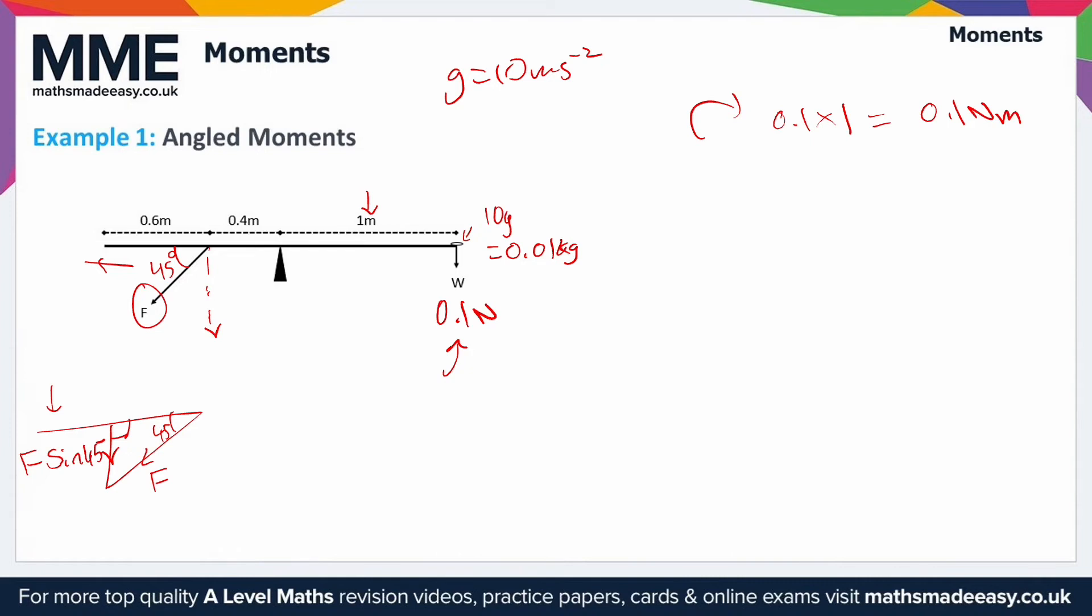So f sin 45. The distance from the pivot is 0.4 so the anti-clockwise moment is 0.4 times f sin 45. We can't really do much with that at the moment, but we know this is in equilibrium so these two are equal. So we'll have 0.1 equals 0.4 f sin 45. We can do a little bit of rearranging here and we'll end up with 1 over 4 sin 45 is f.